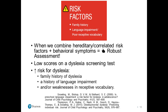Risk factors include family history — we know there is a high preponderance of dyslexia across families. We also know that low scores on a dyslexia screening test can be risk factors, as screening tests are made to help differentiate at-risk and not-at-risk classification. Language impairments — such as poor receptive vocabulary — are also important considerations.